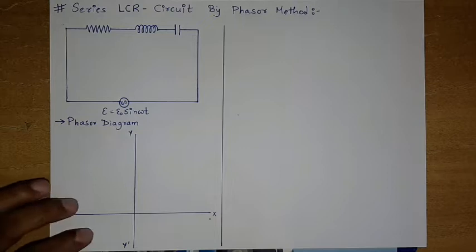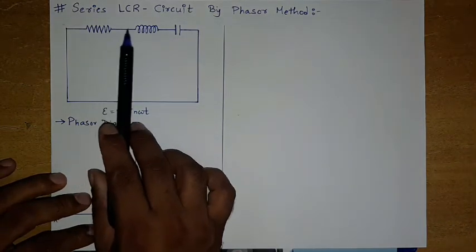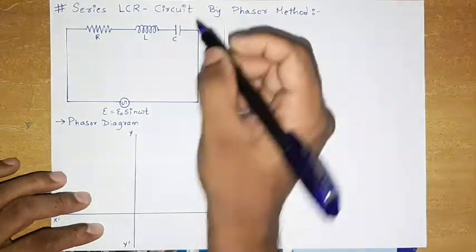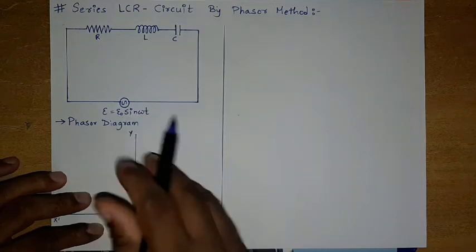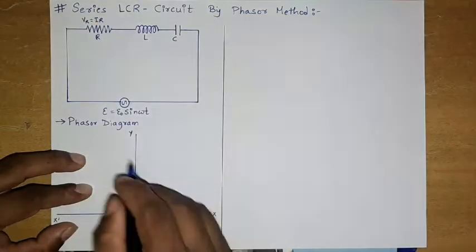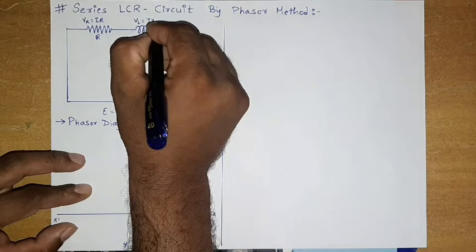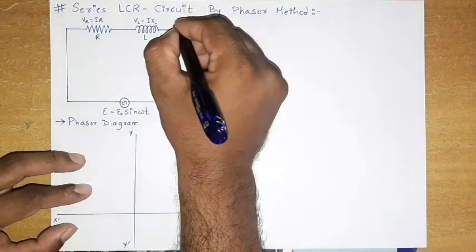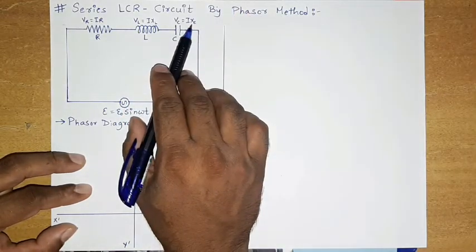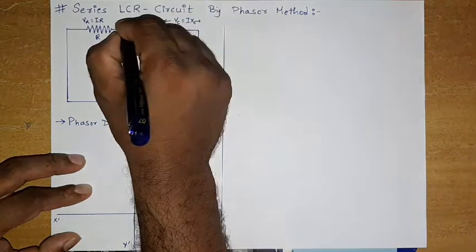Today's topic is the series LCR circuit by phasor method. In the circuit we have three components — resistor, inductor, and capacitor — connected in series, with supply epsilon equal to epsilon_not sine omega t. The voltage across the resistor is VR = I·R, voltage across the inductor is VL = I·XL (inductive reactance), and voltage across the capacitor is VC = I·XC (capacitive reactance).